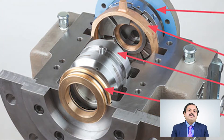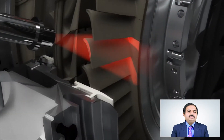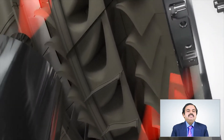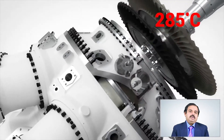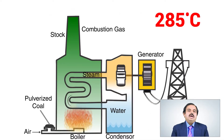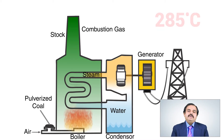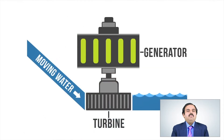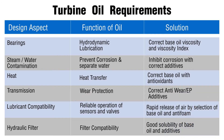The turbine oil also carries away some of the heat generated at the bearings. Among turbines, the highest operating temperature is seen in gas turbines, where hot spots can exceed 285 degrees Celsius. The same holds true for modern ultra-critical steam turbines. Hence, the oil life in gas turbines is restricted compared to steam and hydro turbines. There is also the risk of contamination with steam and water in steam and water turbines. The turbine oil requirements are built around these operating conditions.